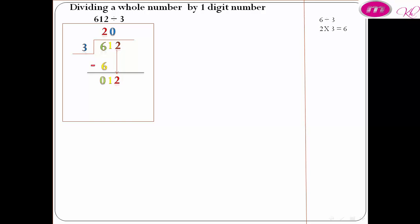It becomes 12. 12 divided by 3 equals 4. 4 above 2. The result is 204.